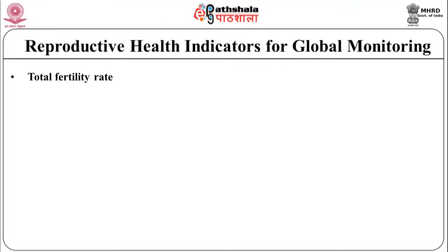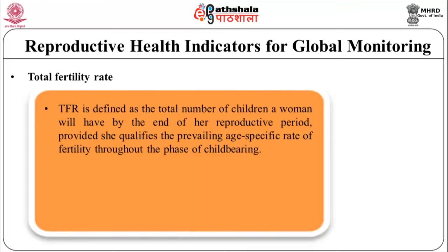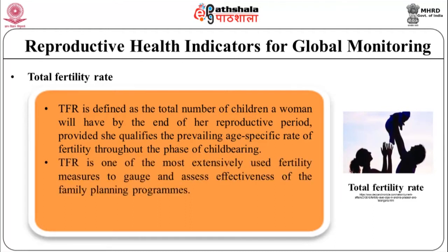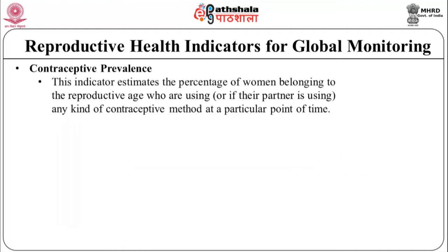Reproductive health indicators for global monitoring include total fertility rate (TFR), defined as the total number of children a woman will have by the end of her reproductive period, provided she qualifies the prevailing age-specific rate of fertility throughout the phase of childbearing. TFR is one of the most extensively used fertility measures to gauge and assess the effectiveness of family planning programs, and this measure remains unaffected by the age structure of the female population.